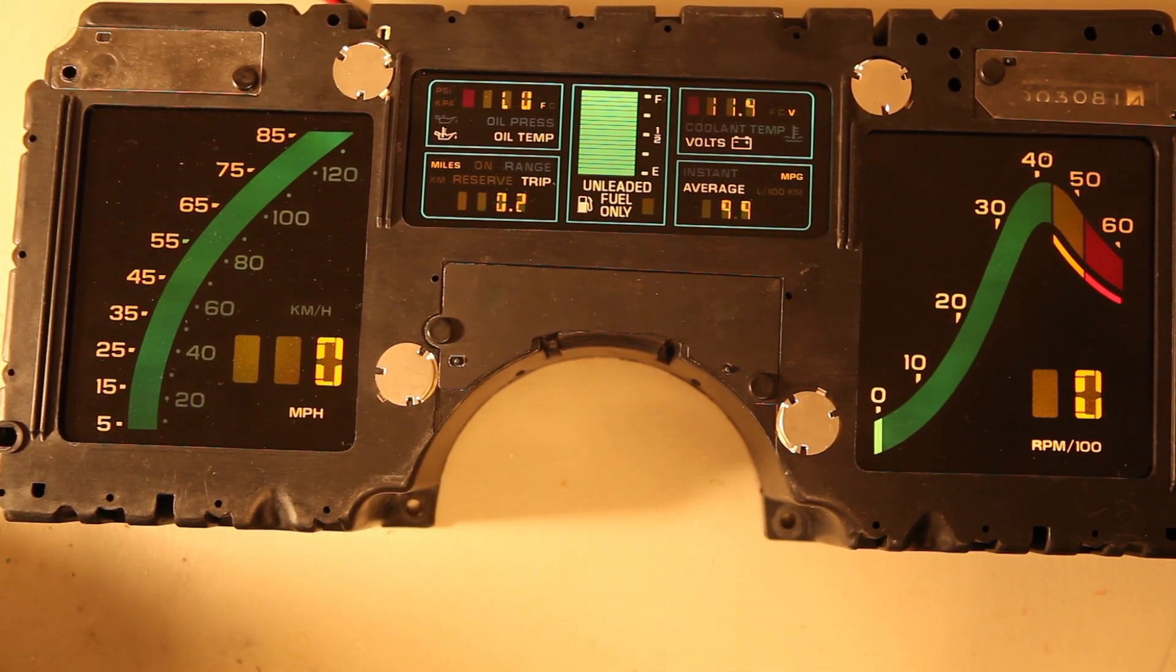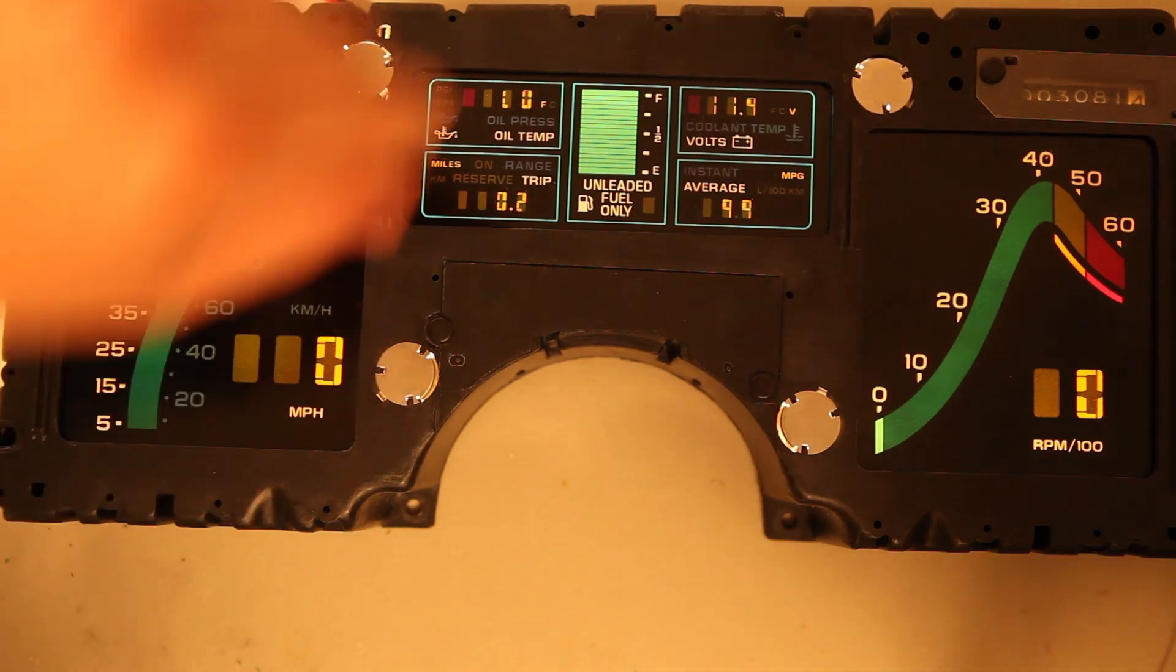The signal generator is set to 65 Hz sine wave, again one volt peak amplitude, and we'll turn that on now.